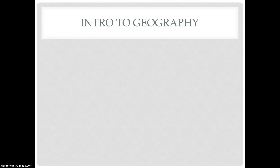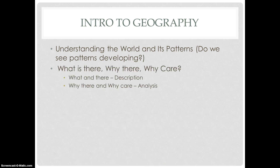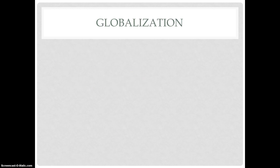The first thing we talked about was the intro to geography. In AP Human Geography, one important thing we must do is understand the world and its patterns — how do we see patterns developing around the world? One methodology we use is 'What, Where, Why There, and Why Care.' 'What' and 'Where' are description-based, giving a summary of the event and explaining where it happened. 'Why There' and 'Why Care' are analysis-type questions that require more in-depth understanding of how events happened and how they can affect you.